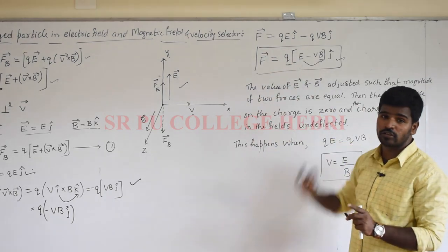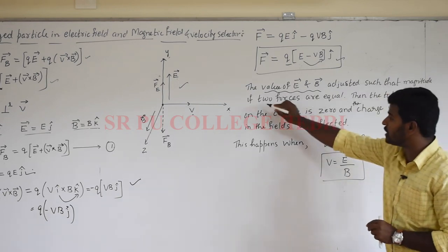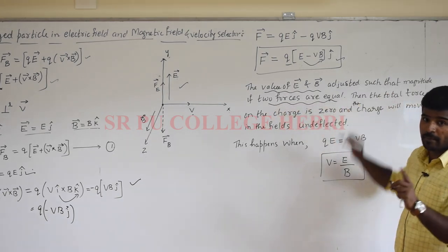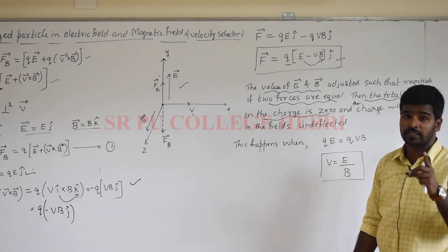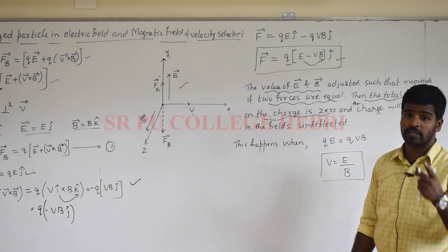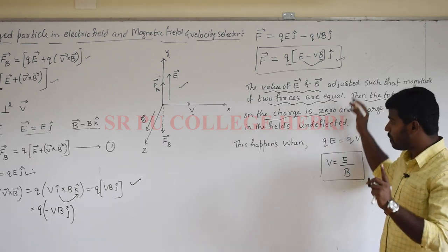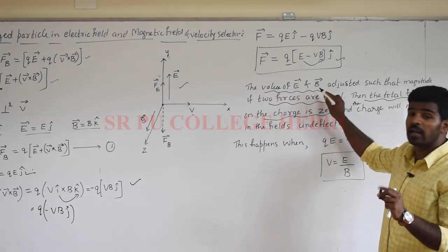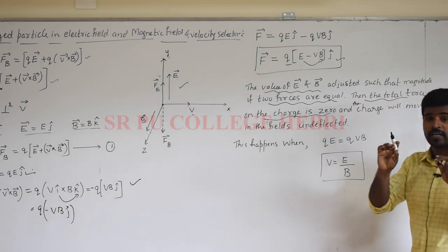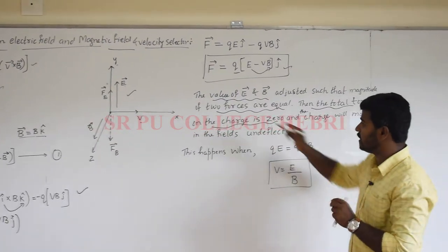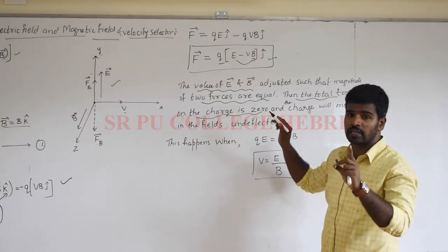Now, as we adjust the values of electric field and magnetic field so that the magnitudes of the two forces are equal, the total force on the charge is equal to zero. When the magnetic force experienced by the charged particle equals the electric force experienced by the charged particle, the net force on the charged particle is zero. Therefore, the values of E vector and B vector are adjusted so that the two forces are equal, and the charge moves undeflected through the fields.